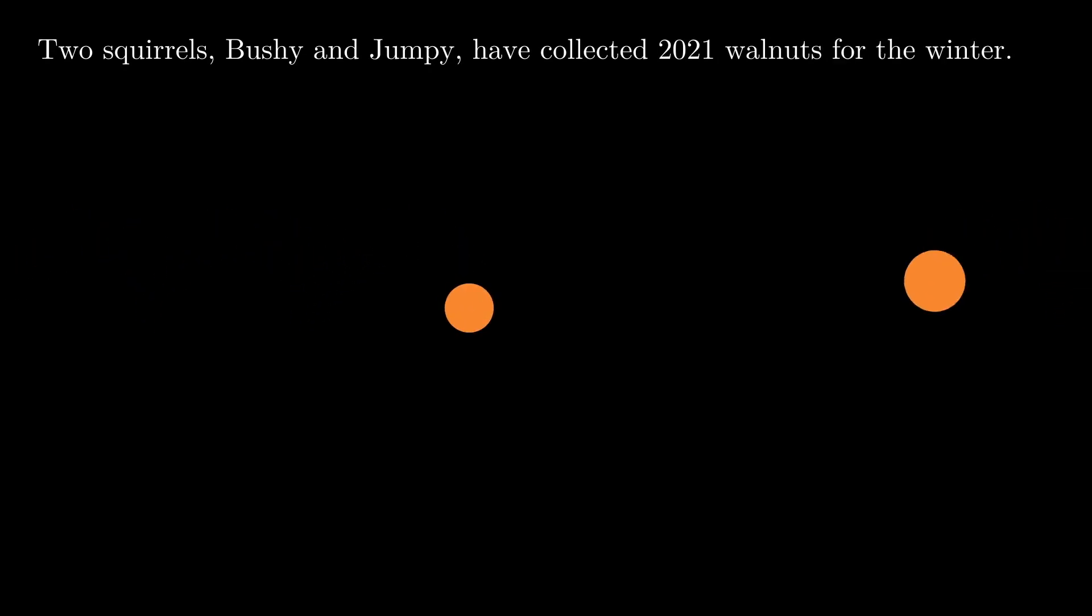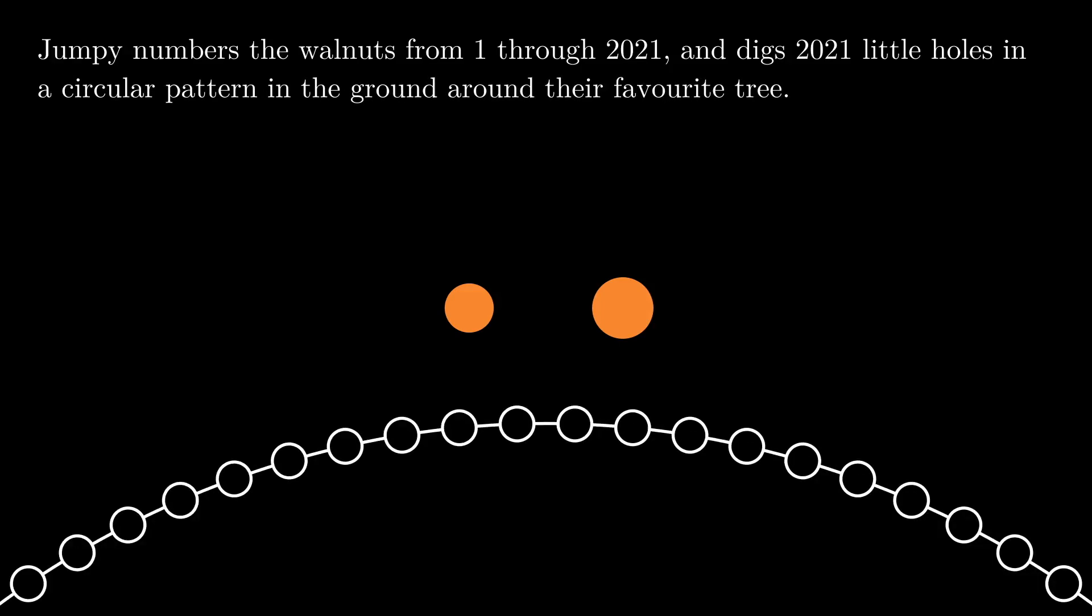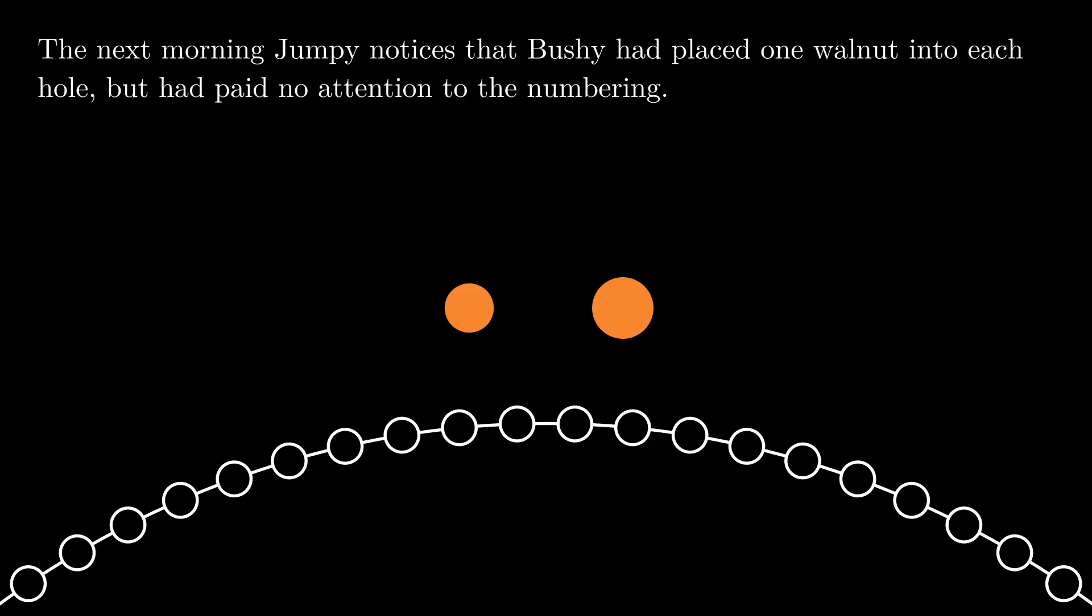Two squirrels, Bushi and Jumpy, have collected 2021 walnuts for the winter. Jumpy numbers the walnuts from 1 through 2021 and digs 2021 holes in a circular pattern around their favorite tree. The next morning, Jumpy notices that Bushi had placed one walnut into each hole, but had paid no attention to the numbering.